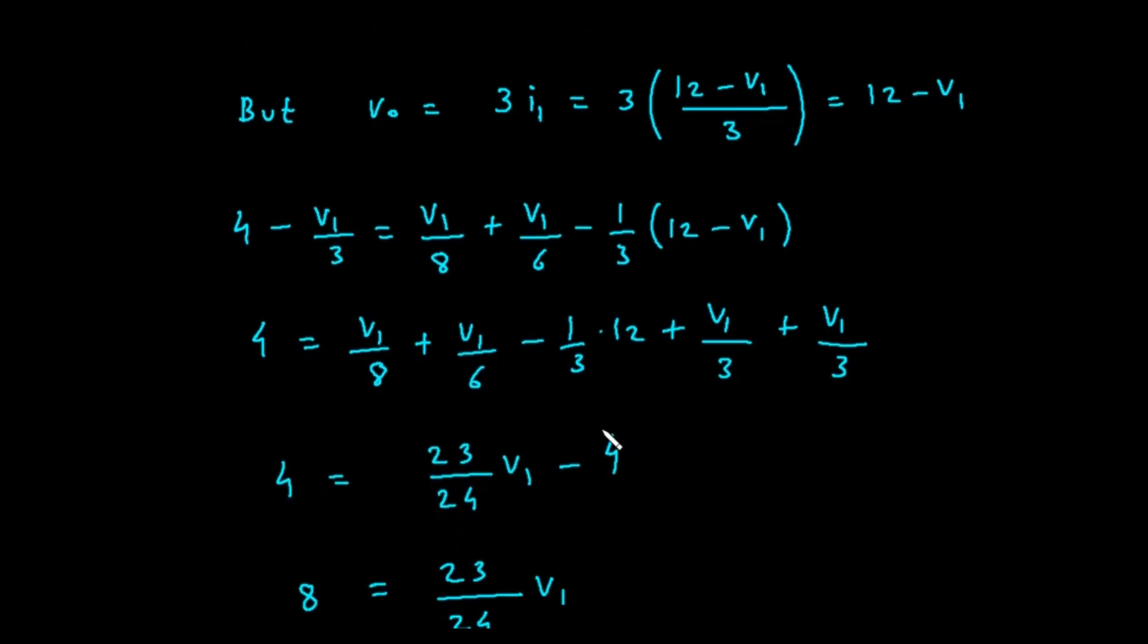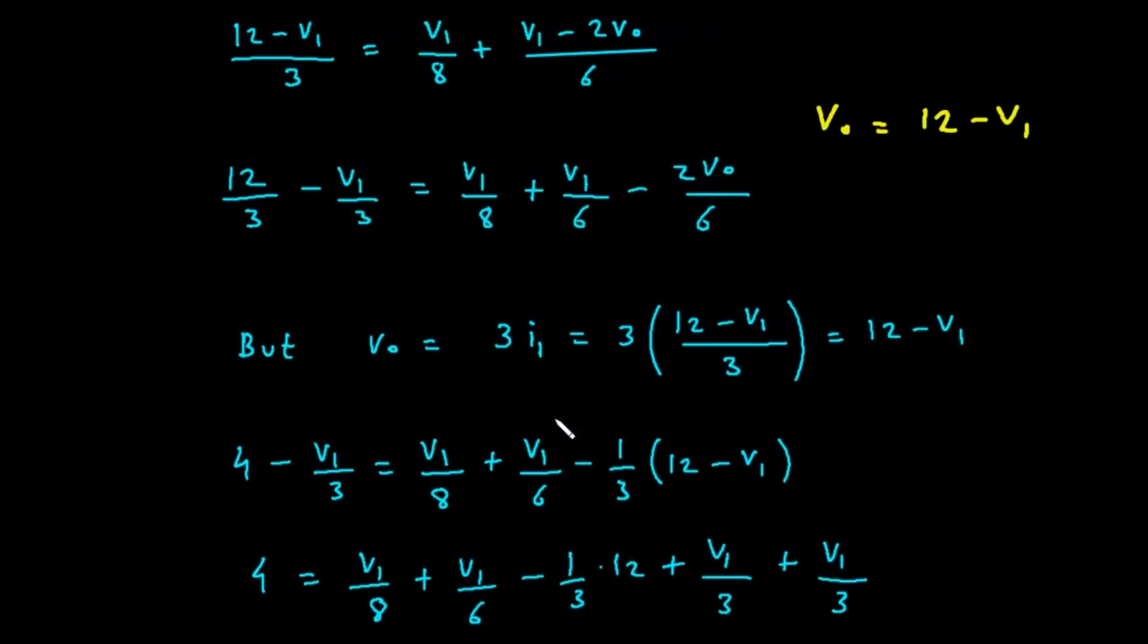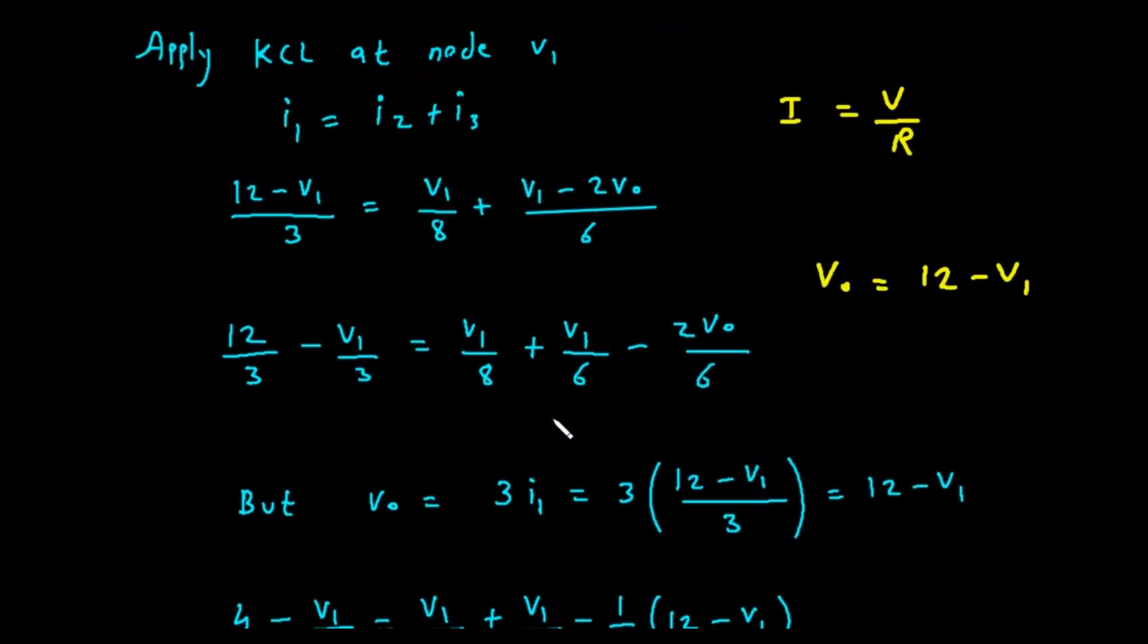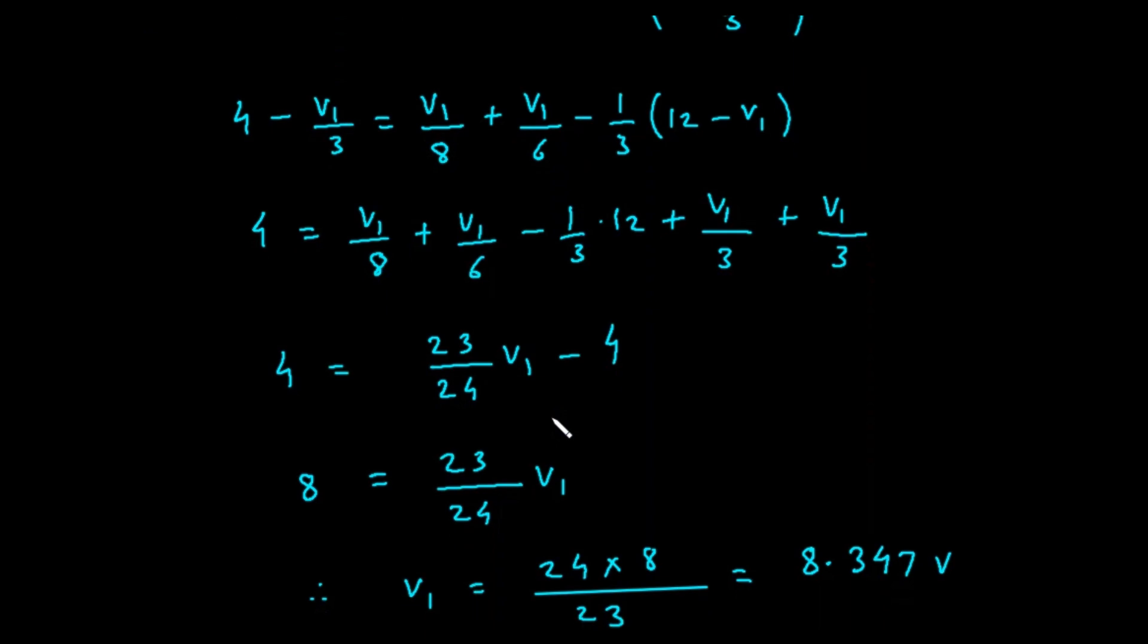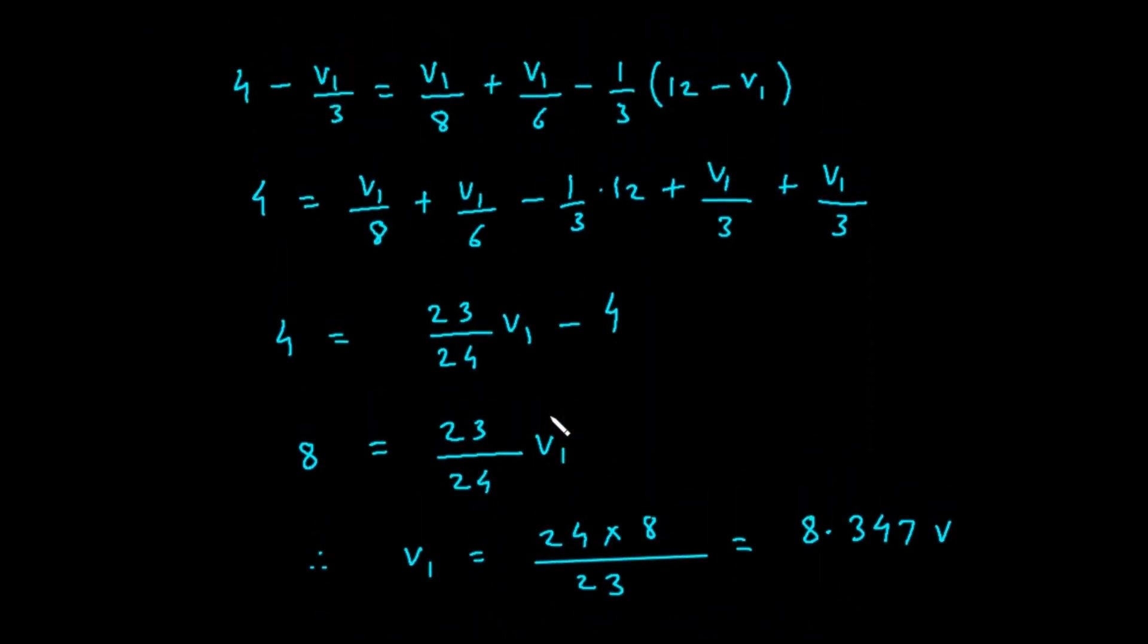4 plus 4 equals V sub 1 over 8 plus V sub 1 over 6 plus V sub 1 over 3 plus V sub 1 over 3. This simplifies to 8 equals V sub 1 over 8 plus V sub 1 over 6 plus 2 times V sub 1 over 3. To combine the fractions on the right, we need a common denominator, which is 24.